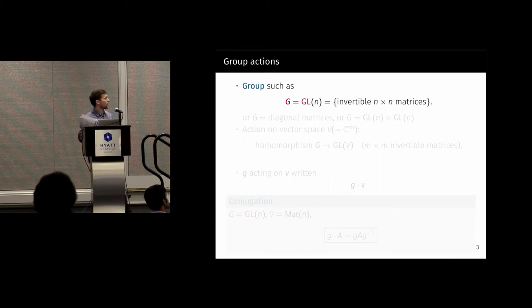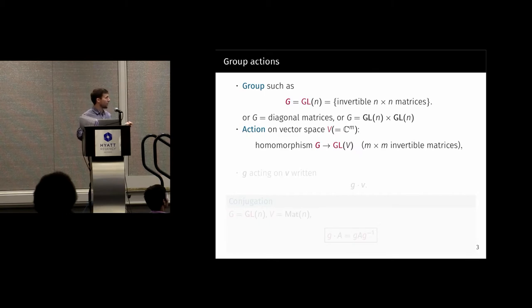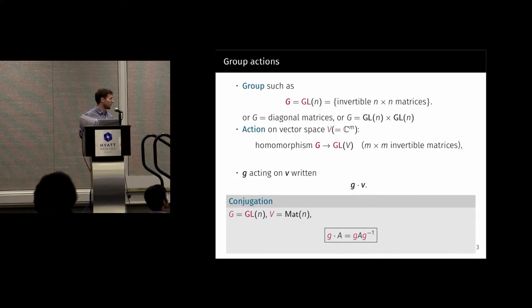The groups we're going to be working with are going to be groups like GL_N, the group of diagonal matrices, or products of GL_Ns. An action on a vector space is a homomorphism from the group into the group of invertible matrices. We'll write g acting on v as g dot v. For example, a matrix acts on the vector space of matrices by conjugation.